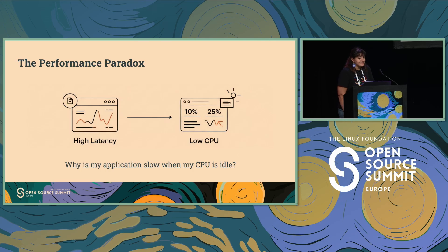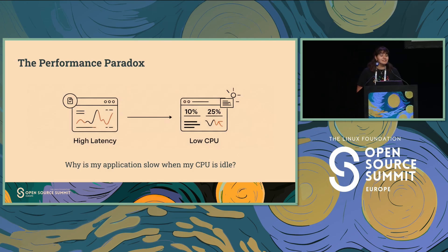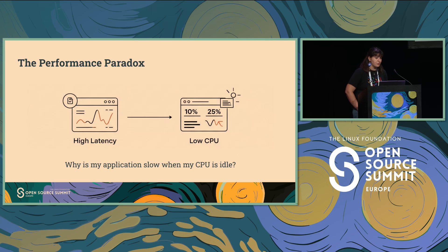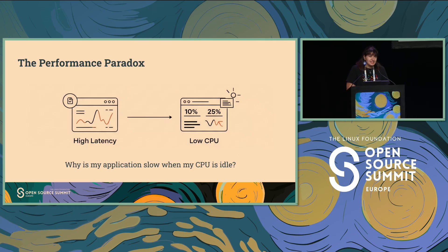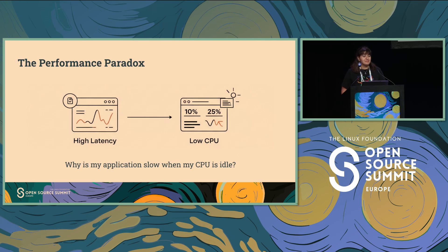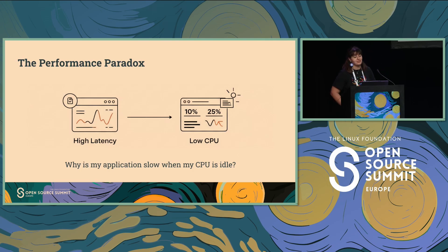You've probably seen this: you get an alert that application latency is high, but when you go to the dashboard, CPU usage is below 30%. You try to understand — my code is not the bottleneck, it's not using that much CPU. But what is? And this isn't a bug. It's a paradox caused by a hidden workload in the Linux kernel.